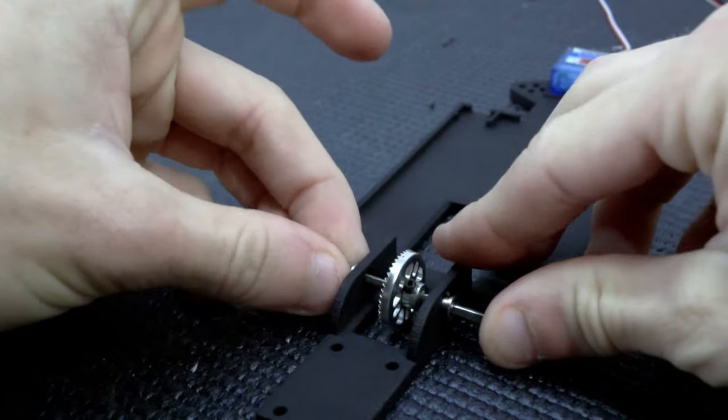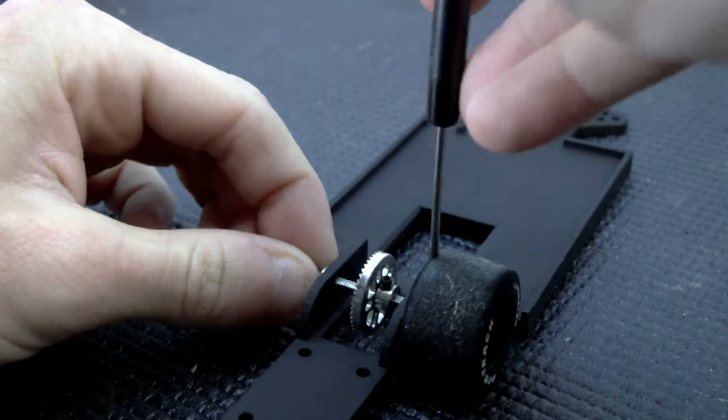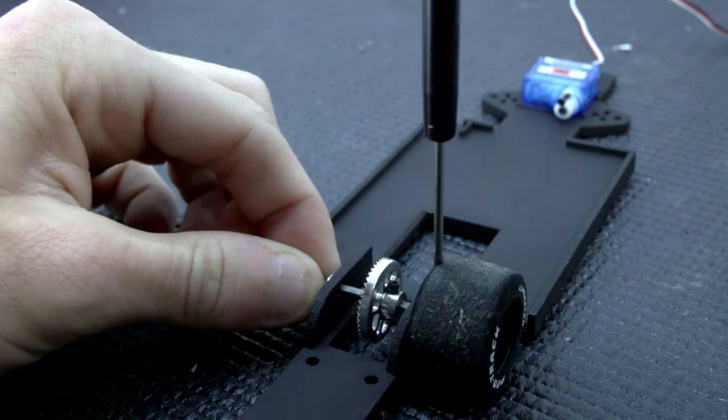Rear wheels are then installed. They need to be snug up against the chassis but still spin freely.